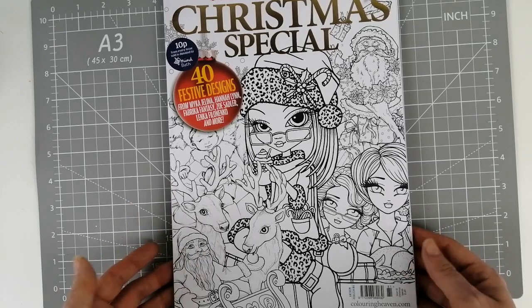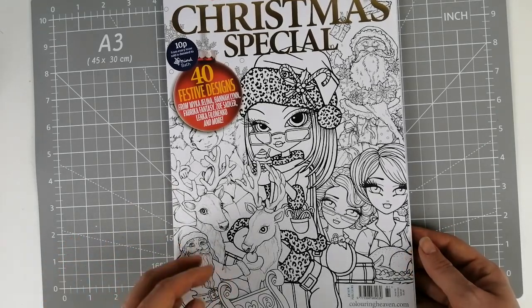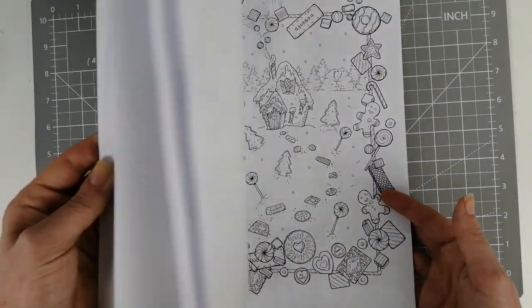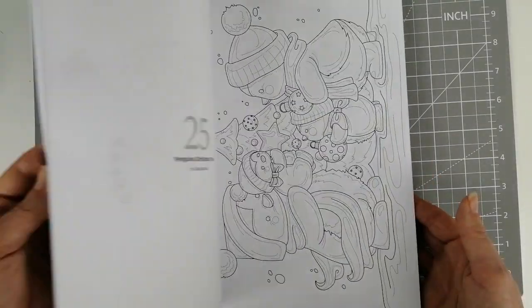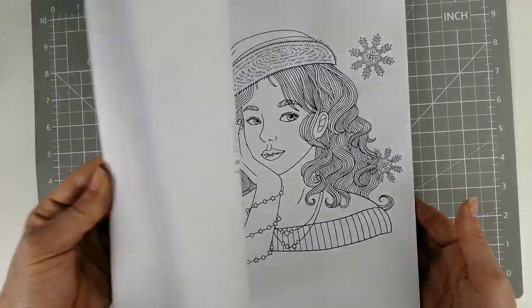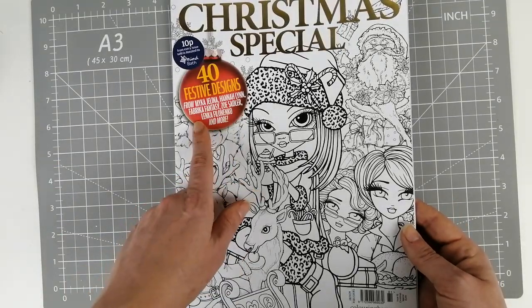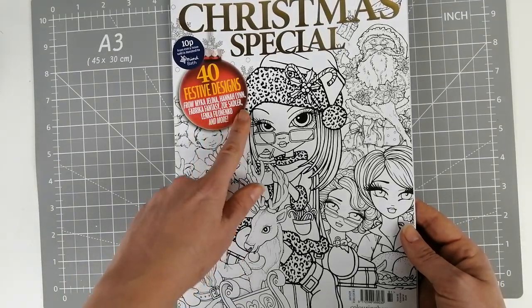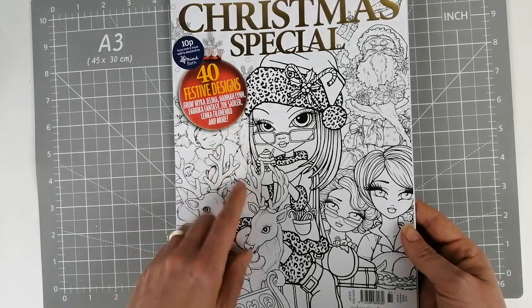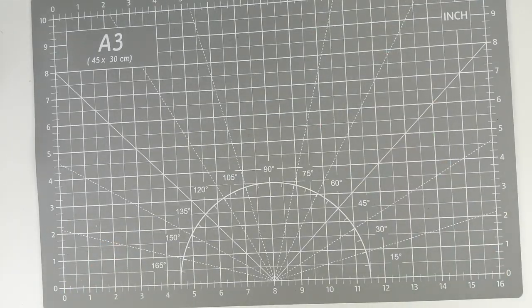My Coloring Heaven this month came, and surprisingly, as every November edition, it's the Christmas special already. I'm sure you'll have seen lots of flips of these by now. Very cute pages. This one is by Mika Gelina, Hannah Lynn, Fabrica Fantasy, Zoe Sadler, Lenke Filonenko, and more.